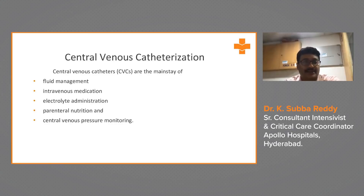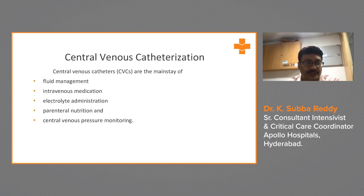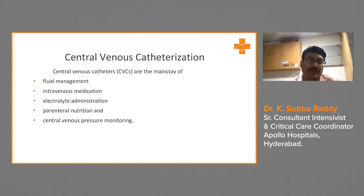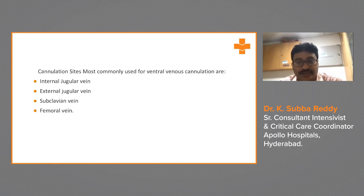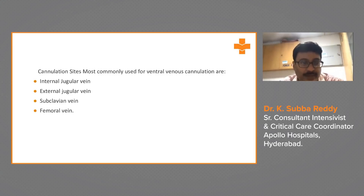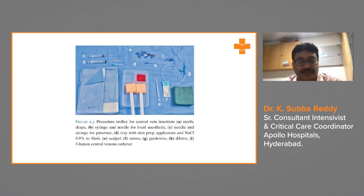Central venous catheterization is the mainstay for fluid management, intravenous medications, concentrated electrolyte administration, total parenteral nutrition, and CVP monitoring. The most commonly used cannulation sites are the internal jugular vein, external jugular vein (less common), subclavian vein, and femoral vein — though femoral lines are not encouraged in our emergency or intensive care unit.